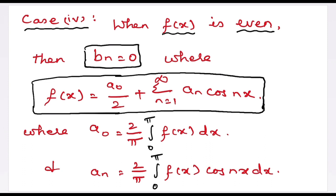Fourth case: when f(x) is an even function, bₙ = 0. Since sin(nx) is an odd function, f(x)·sin(nx) is an odd function, by the property that even × odd = odd. Therefore, bₙ = 0. Also, a₀ = (2/π)∫[0 to π] f(x) dx. Since cos(nx) is an even function, f(x)·cos(nx) is an even function, by the property that even × even = even. Therefore, aₙ = (2/π)∫[0 to π] f(x)cos(nx) dx.